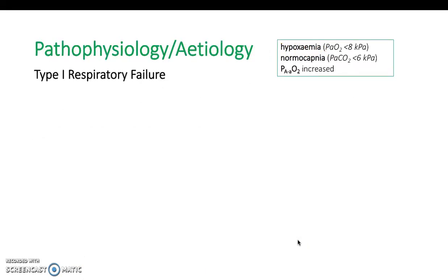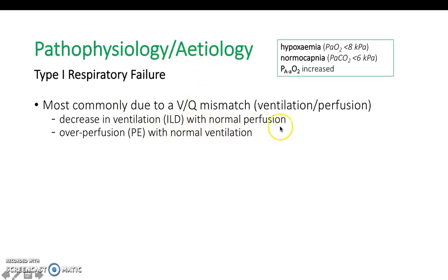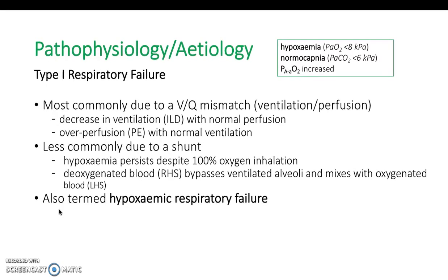Type 1 respiratory failure is most commonly due to a VQ mismatch — when ventilation or perfusion has changed while the other stays the same. For example, in interstitial lung disease, parenchymal disease worsens diffusion while blood flow to the alveoli continues, creating a mismatch. With a PE, there is absent or reduced perfusion to some lung areas while air still enters those alveoli normally. Less commonly, type 1 can be due to a shunt, which causes hypoxemia without affecting carbon dioxide.